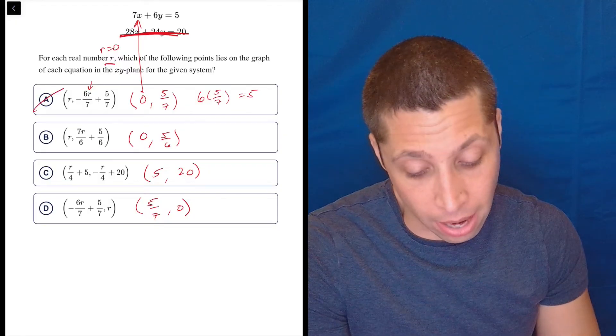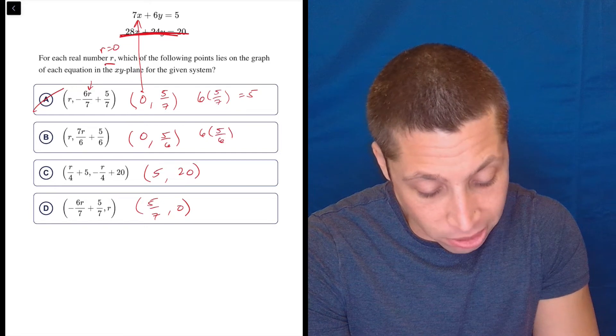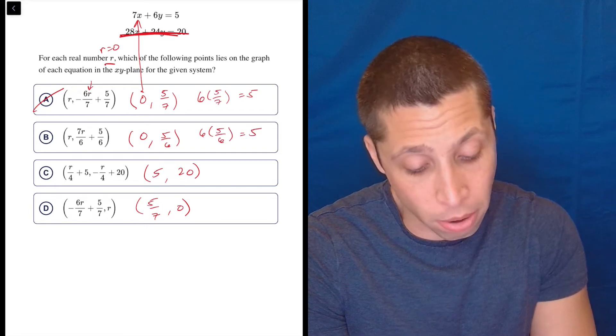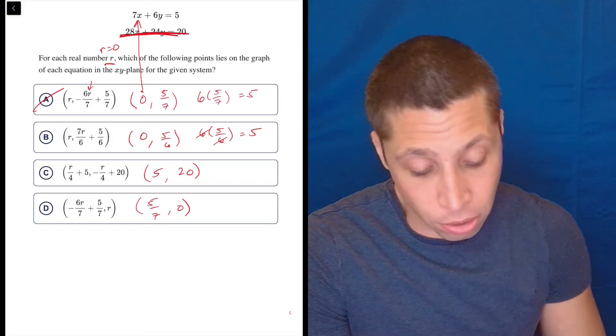So just like that, it's done. But if I do the same thing here in B, 6 times 5/6 equals 5, that does work out. Because when I multiply these things together, the 6ths will reduce. And so that checks out.